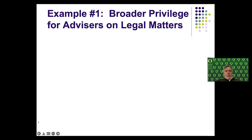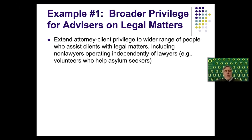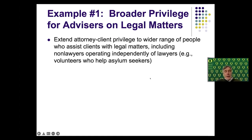The first example would be to broaden the attorney-client privilege to touch a wider range of third parties that a client or a party might interact with for advice on legal matters. Right now it extends to attorneys, but as I mentioned, a lot of people can't afford attorneys. Here in Lane County, Oregon, for example, there are important volunteers and non-lawyers who are assisting litigants — one example I recently became aware of is a group of volunteers who help asylum seekers gather information relevant to their petitions for political asylum. Oregon, along with other states, continues to explore opportunities to widen who can do what were heretofore exclusively legal services. We need our privilege law to be more expansive and touch a range of people in whom clients repose confidence about legal matters.